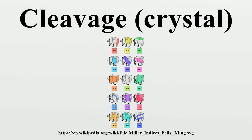Cleavage, in mineralogy, is the tendency of crystalline materials to split along definite crystallographic structural planes. These planes of relative weakness are a result of the regular locations of atoms and ions in the crystal, which create smooth repeating surfaces that are visible both in the microscope and to the naked eye.